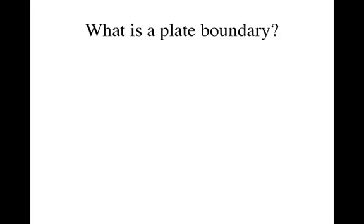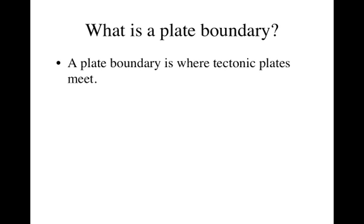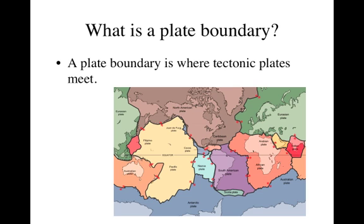So what exactly is a plate boundary then? A plate boundary is where tectonic plates meet, and we can look at this map and we can see everywhere there is a big black line — the outline of a plate. We know that a plate is meeting there, and so every place that there is a plate that meets another plate, we have a plate boundary.